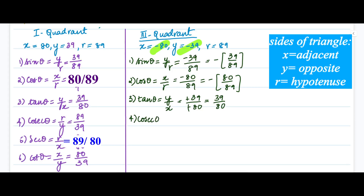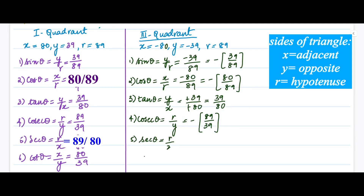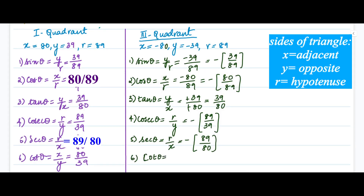Cosecant theta is the reciprocal of sine theta: the negative sign remains, giving -89/39. Secant theta is the reciprocal of cosine theta: negative sign remains, giving -89/80. Cotangent theta is x divided by y, the reciprocal of tan theta, giving 80/39.